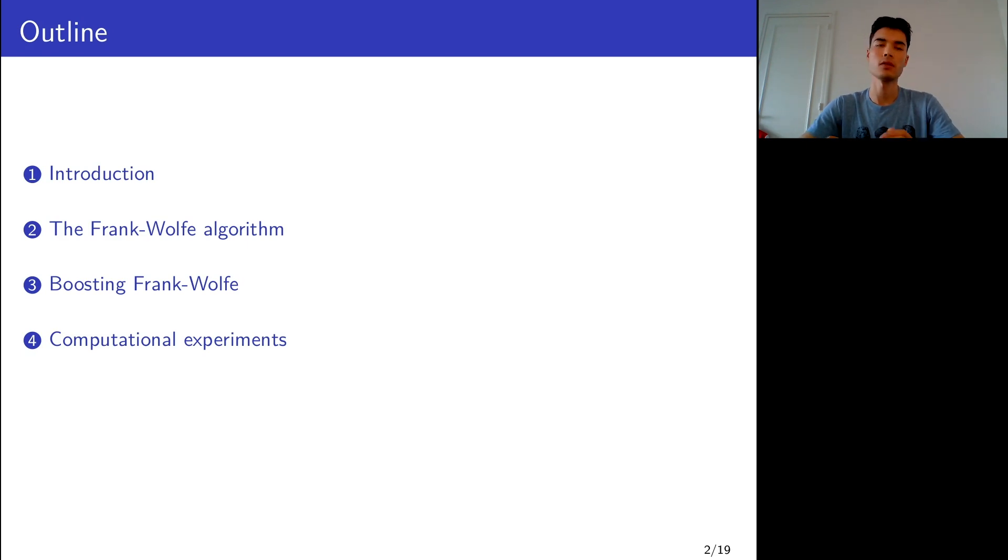The Boosting Frank-Wolfe algorithm aims at better aligning the descent directions of Frank-Wolfe with those of the negative gradients. Although you may be required to use multiple linear minimizations per iteration, the progress obtained overcomes this cost and leads to significant speedups. I will show some computational experiments and conclude by mentioning opportunities for future extensions.